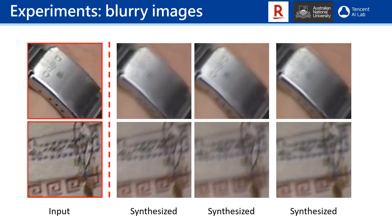This is our synthesized blurry image. The first column shows the input sharp images, and the next three columns show the generated blurry images.